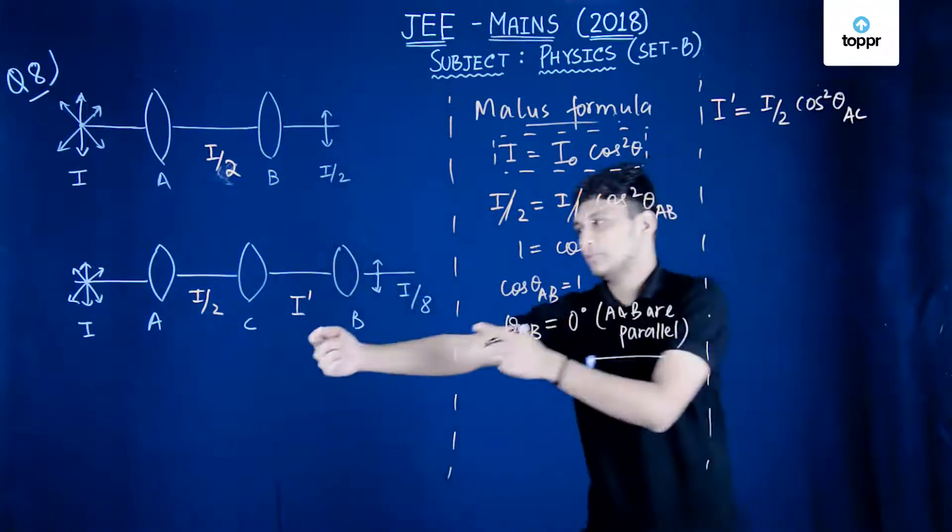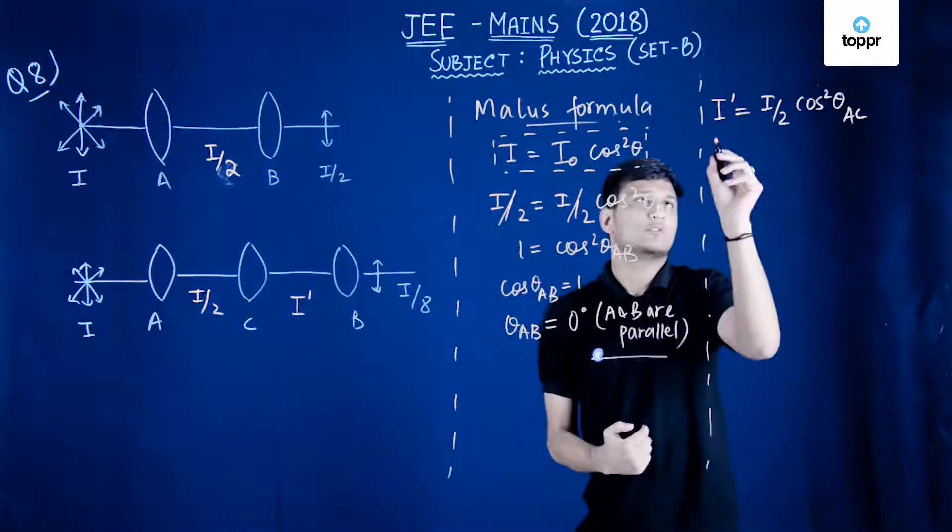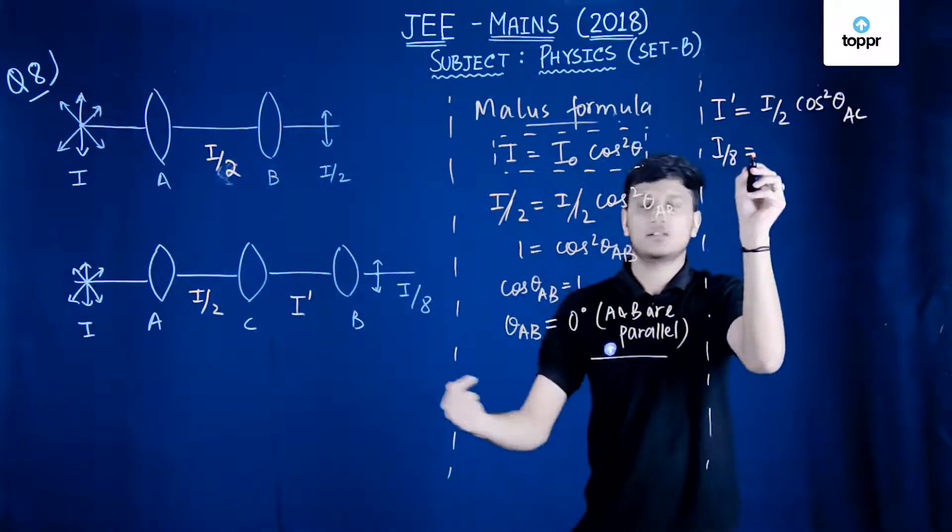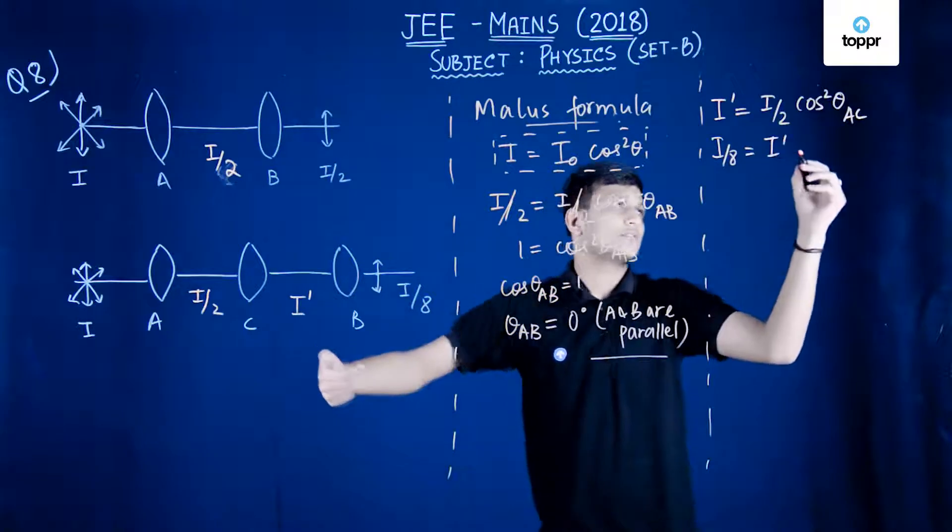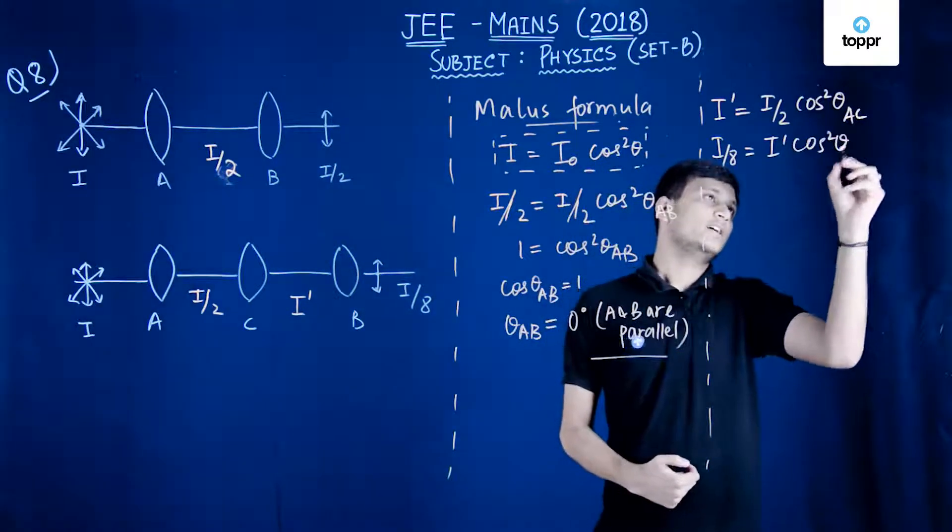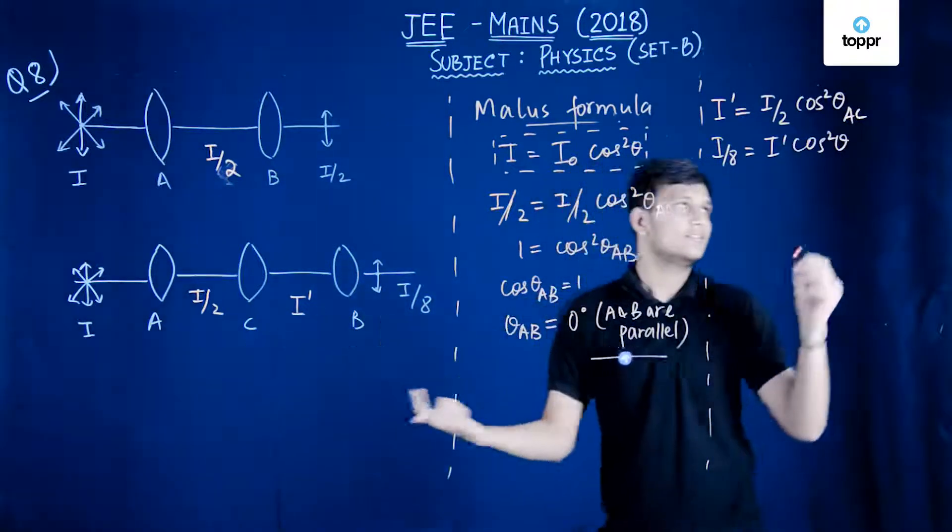And the second one would be between C and B. So that would be I by 8 would be equal to I prime cos square theta between B and C.